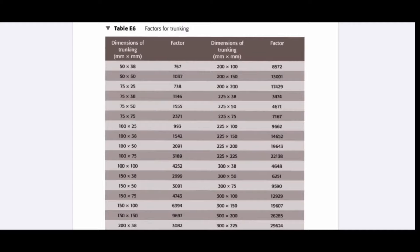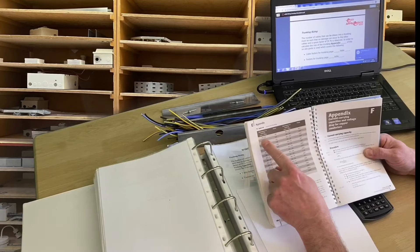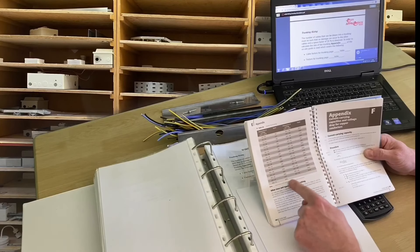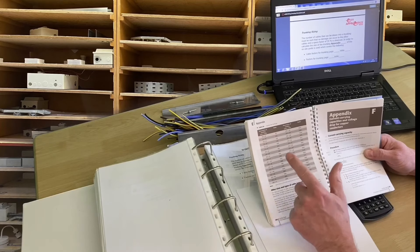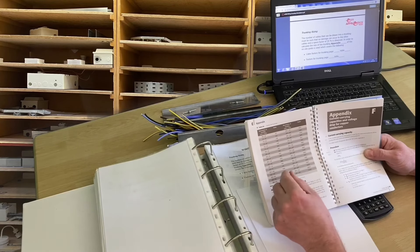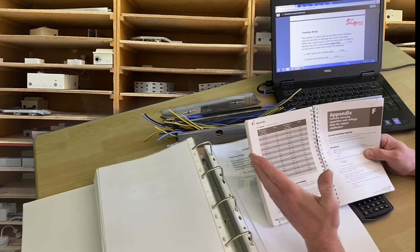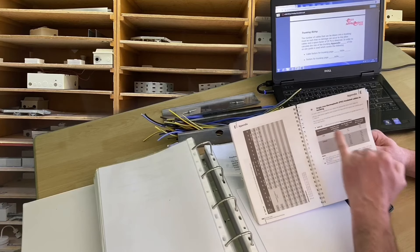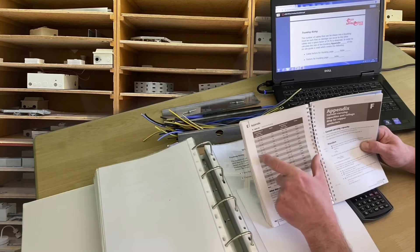The big difference with table E6 is that the factors are not in a logical order. For example, 50 by 38 has a factor of 767, the next one — 50 by 50 — has a factor of 1037, and then 75 by 25 has a factor of 738. So in the notes I expect you to find the smallest trunking available by scanning through the factors until you find the one that closely matches the factor generated by the conductors. Those are Appendix E tables E5 and E6.